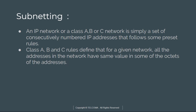Subnetting an IP network — a Class A, Class B, or Class C — is simply a set of numbered IP addresses that follow the same preset rules. Class A, Class B, and Class C rules define that for a given network, all the addresses have the same value in some of the octets of the addresses.